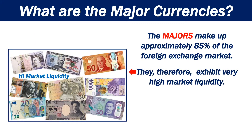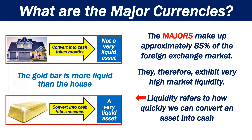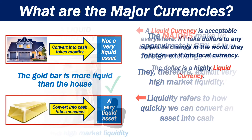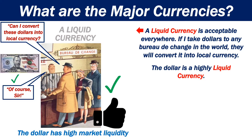They therefore exhibit very high market liquidity. Liquidity refers to how quickly we can convert an asset into cash. A liquid currency is acceptable everywhere. If I take dollars to any bureau de change in the world, they will convert it into local currency. The US dollar is a highly liquid currency.